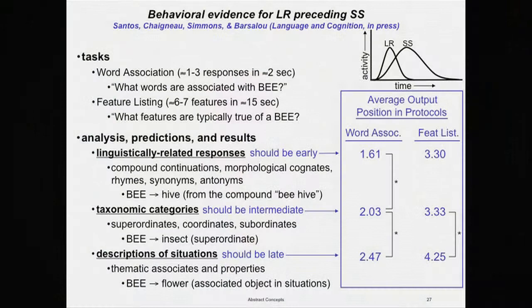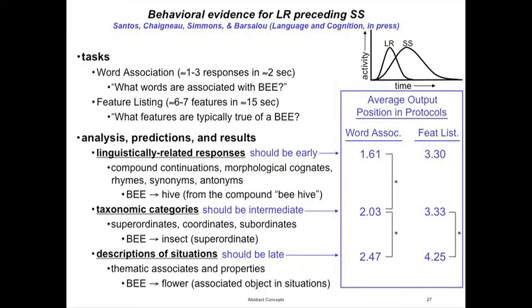Instead of calling this 'activity,' maybe we should think of this more as 'readout' — what's happening is that the executive system is first looking to the linguistic system as a source of information for its initial responses, perhaps because they're available faster, and then once that dries up, it shifts into the simulation system. In this experiment, features from the linguistic system — those with some kind of linguistic property in the surface form, like coming from linguistic compounds — are about a second or two faster than features with no marker for a linguistic relation. But the time course is probably widely variable depending on the task and the words.